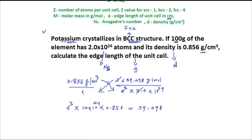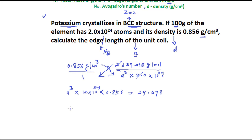We can transfer these values on right side. The value which we will get A cube is equal to 39.098 and divided by this, the value we get 1.0 multiplied by 10 to power 24 and multiplied by 0.856.